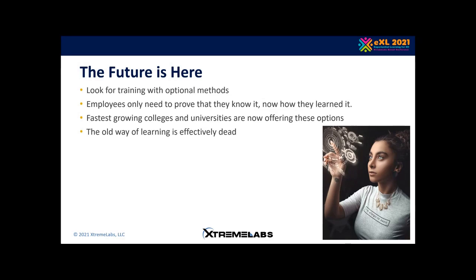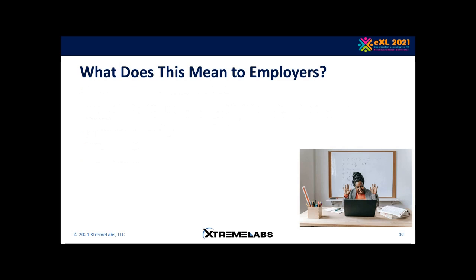Western Governors University created a new type of university — they only give you the final exam. They offer you to learn by reading, watching, and doing, but they don't tell you how to learn it. You just take the final exam and pass the class. There is precedent for this in colleges that let you test out of a course. The old way of learning — saying this is the only way to earn a certification or degree — is not equitable and is bad for business.